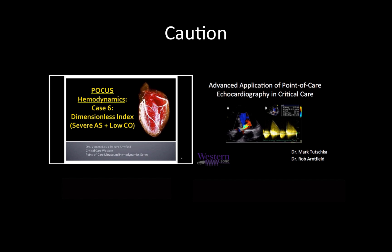Finally, there are a few other situations in which the technique described in this video can be misleading, such as the presence of concomitant aortic regurgitation or severe diastolic dysfunction. For a more complete list, I direct you to Dr. Robert Arnfield's Advanced Critical Care Echocardiography Handbook found on the westernsauno.ca site, or the 2017 American Society of Echocardiography Guidelines for the Evaluation of Aortic Stenosis — see the video description below for links.